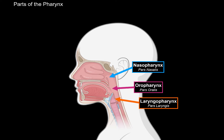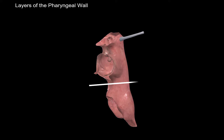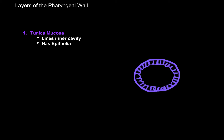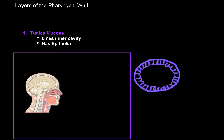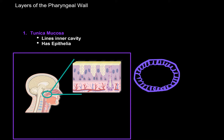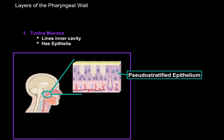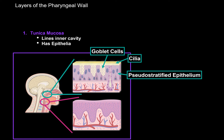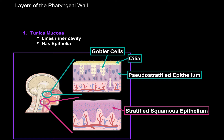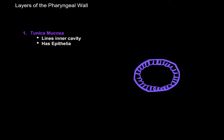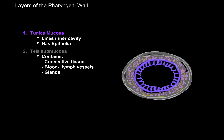Now let's go through the layers of the pharyngeal wall. If you cut the pharynx and look at it in cross-section, you'll see four layers. The first is the tunica mucosa, which lines the inner layer of the pharyngeal cavity. The mucosal layer is lined by epithelial tissue, and different regions are lined by different types of epithelium. The nasopharynx is lined by respiratory epithelium — pseudostratified epithelium with cilia and goblet cells. The rest of the pharynx endures the pressure of food and is lined by stratified squamous non-keratinized epithelium for protection. The next layer is the tela submucosa, containing primarily connective tissue as well as blood vessels, lymph vessels, and glands.